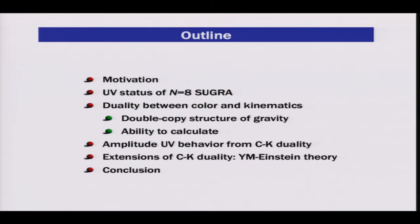So that was the motivation. Here's the outline of the talk. The first part will focus on the UV ultraviolet status of N=8 supergravity, a theory we've been working on for the last six or seven years. Then I will tell you about what we call a duality between color and kinematics, which is a property of Yang-Mills theory itself. It has a very important consequence: it enables the double-copy construction of gravity. More importantly, it enables us to calculate — gives us the ability to compute. I will show some calculations done using this color-kinematics duality.